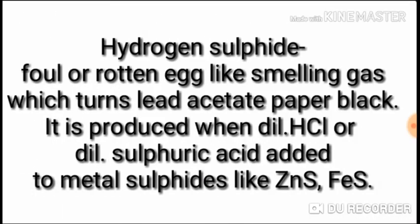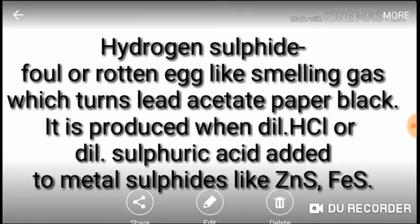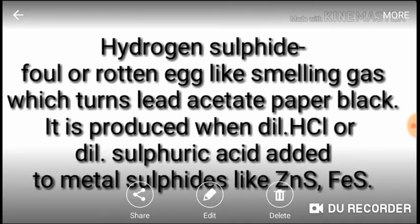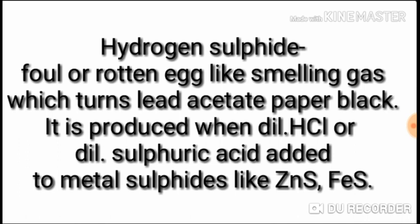Now the next gas is hydrogen sulphide. This gas has a foul or rotten egg-like smell. This gas turns lead acetate paper black. It is produced when dilute HCl or dilute H2SO4 is added to metal sulfides like ZnS or FeS. A typical question: Name the gas which is released when dilute HCl is added to ZnS. The answer will be hydrogen sulphide.